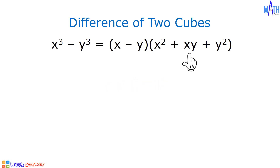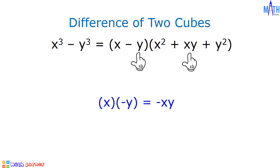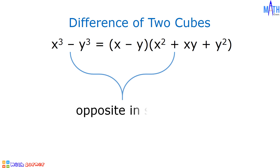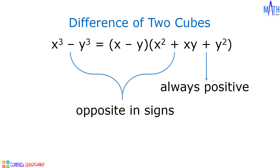xy is the opposite of the product of x and negative y. x times negative y is equal to negative xy, so the opposite of negative xy is positive xy. And y squared comes from the square of negative y — negative y times negative y is equal to y squared. And we have opposite signs here, and this sign is always positive.